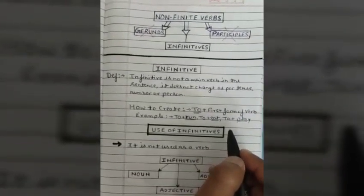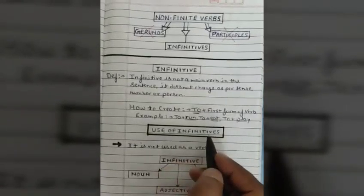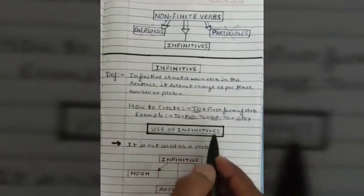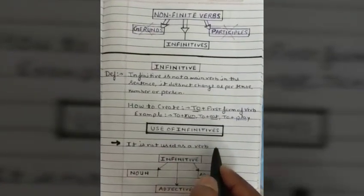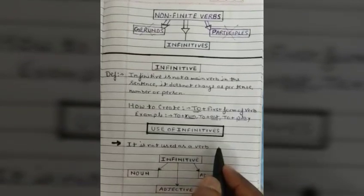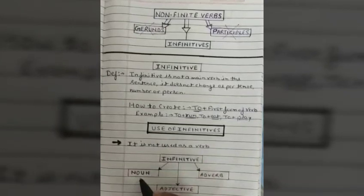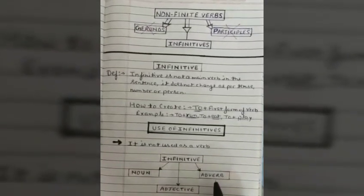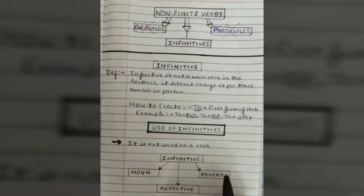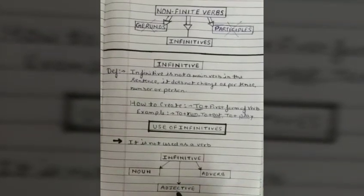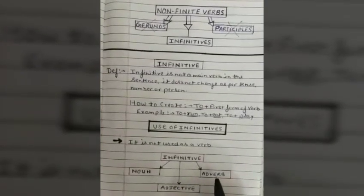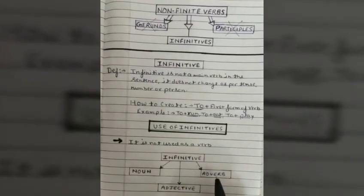Let's understand the uses of infinitives. As I told you before, it is not used as a main verb in the sentence. So how can we use infinitive verb? We can use infinitive as a noun, as an adjective, or as an adverb. Let's start and understand how we can use infinitive as a noun, as an adjective, and as an adverb.